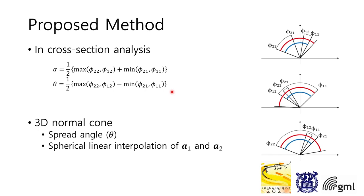To convert 2D cross-section to 3D cone, the spread angle is the same. And the axis can be calculated using spherical linear interpolation of axes of two cones. At the right image, the blue arc is the result from Provot's method. Compared to the red arc, the blue arc is smaller or equal in all cases.